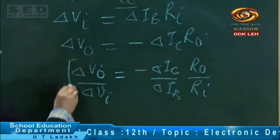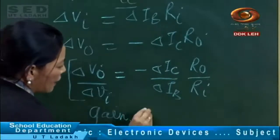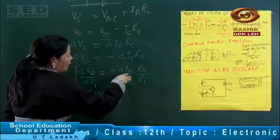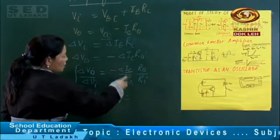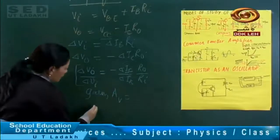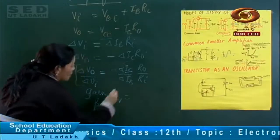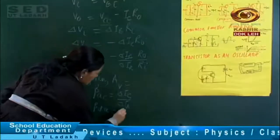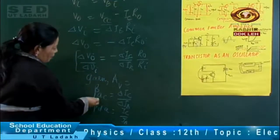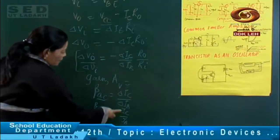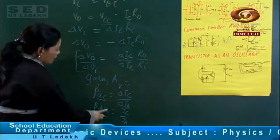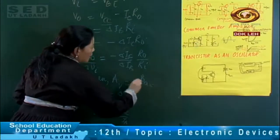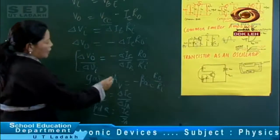So this ratio delta IC upon delta IB is beta AC — the AC current gain. And when we see DC values, we have beta DC, which is IC upon IB. So here you have the voltage gain, which will be minus beta AC multiplied by R-naught upon RI.